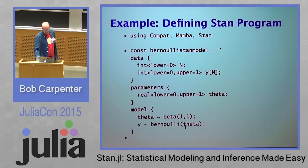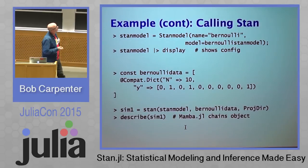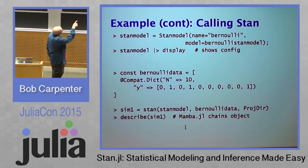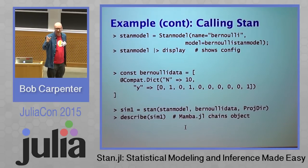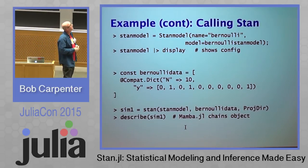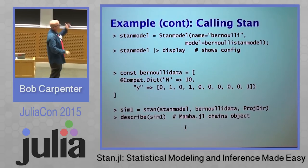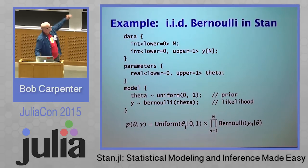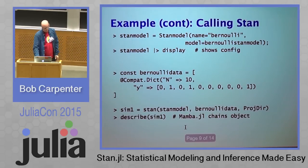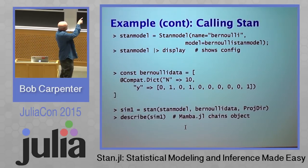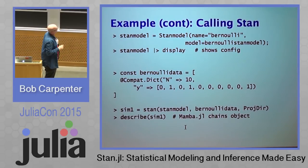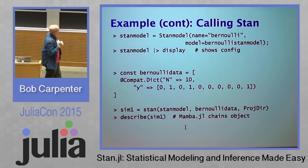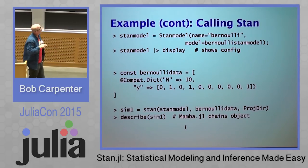This comes right out of the Stan.jl GitHub page so you can follow along yourself. It uses three libraries, then defines the model as just a string inside the language. You build the model by giving it a name — Bernoulli Stan model is the string — and you can display it, which shows all the various configuration with defaults all the way down. Then you define data in the form of a Julia dictionary, which defines the variable n and the variable y — the data block members all get defined in that dictionary. You run Stan by calling the Stan function, passing in the Stan model, the Bernoulli data as an array of dictionaries, and a scratch project directory.